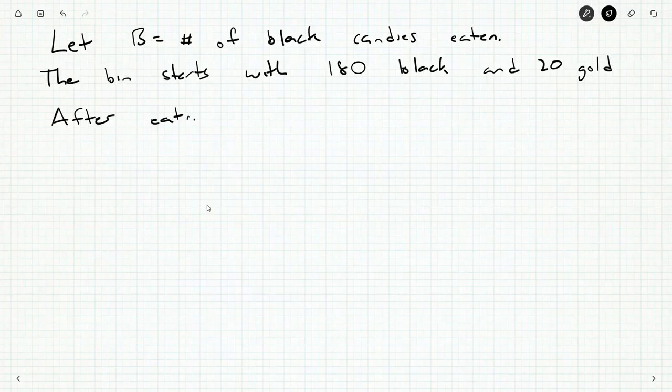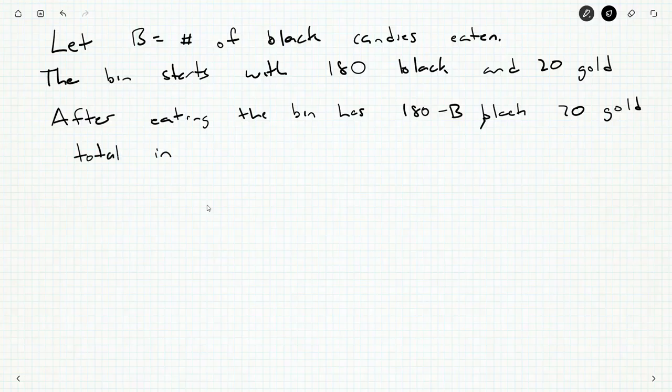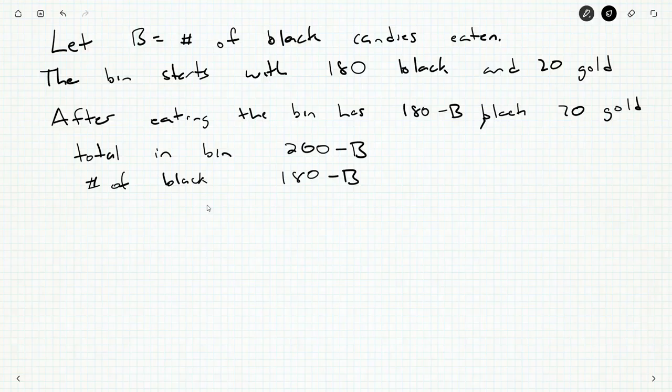So after eating, the bin has 180 minus B black candies and 20 gold. The total number of candies in the bin is 200 minus B. The number of black is 180 minus B. And this should be 80%. So 80% of 200 minus B should be equal to 180 minus B.